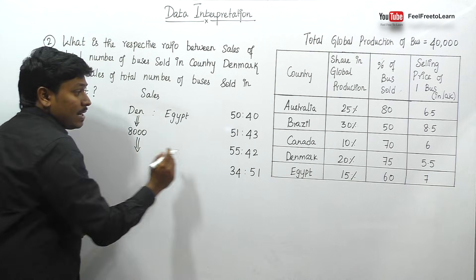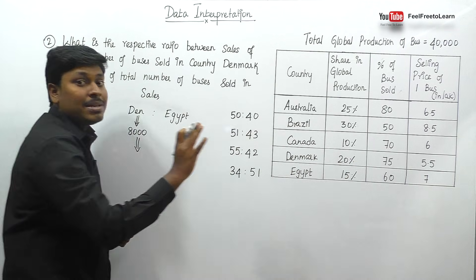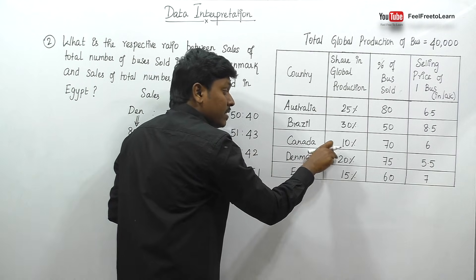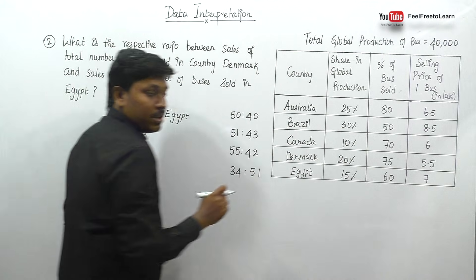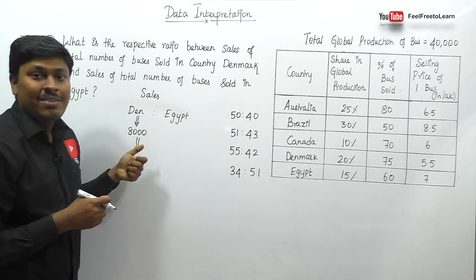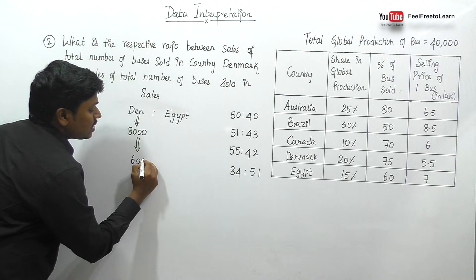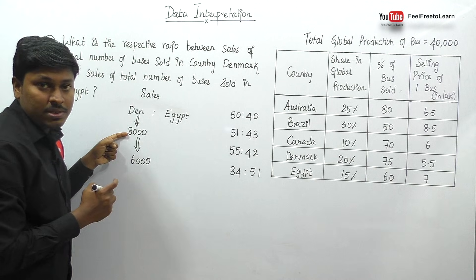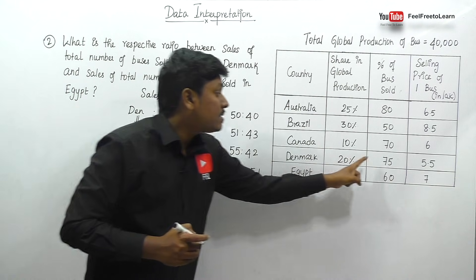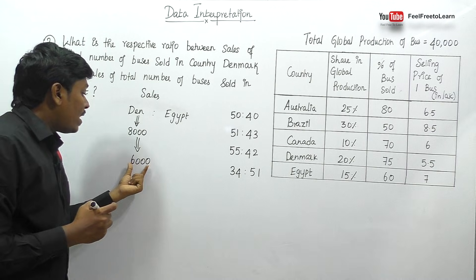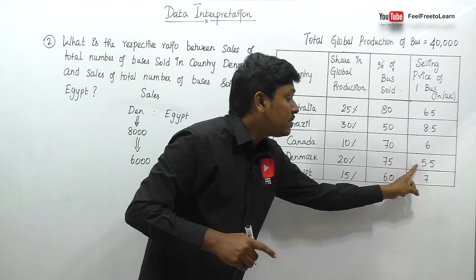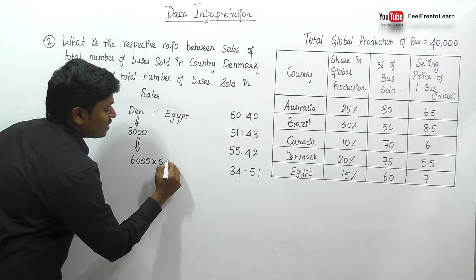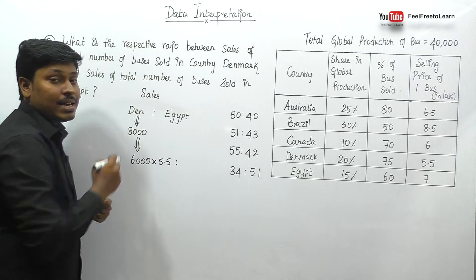Out of 8,000 buses, Denmark sold only 6,000 — that is 75%. They are talking about sales. One bus is sold for 5.5 lakh. So Denmark's total sales = 6,000 × 5.5. Similarly, our next target is to find the total sales of Egypt. Egypt is getting 15% of 40,000, which is 6,000 buses. Out of this 6,000, only 60% of buses are sold — that is 3,600 buses. Egypt is selling one bus for 7 lakh. So Egypt's total sales = 3,600 × 7.